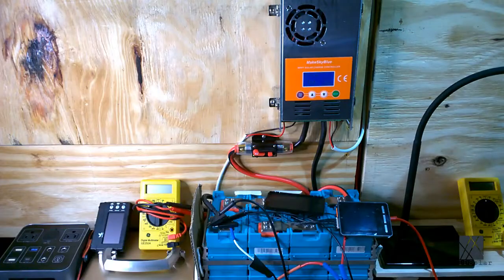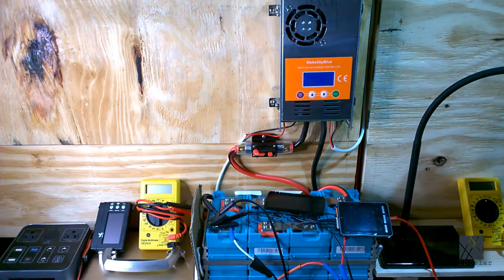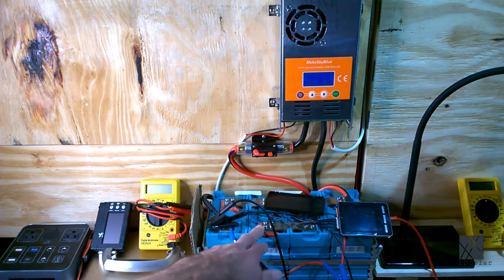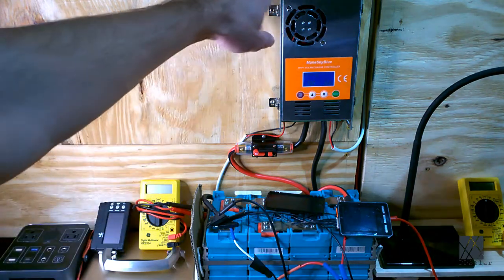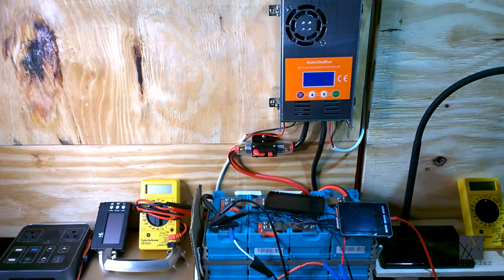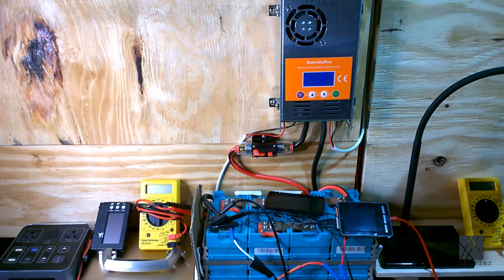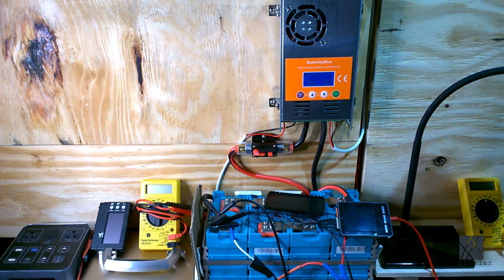It's a little bit hard to see here but this is my miniature off-grid battery bank. This is an old lithium iron phosphate battery I have. This is a MakeSky Blue MPPT charge controller I have and I installed these items recently to power the solar workshop.